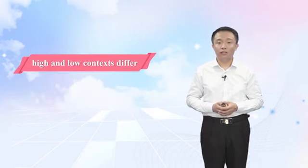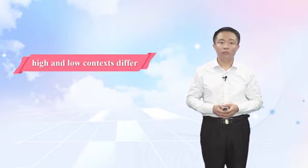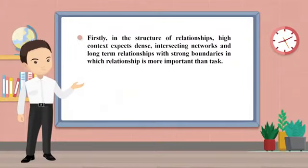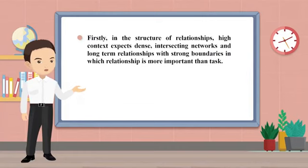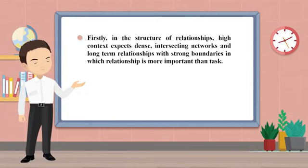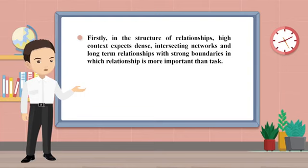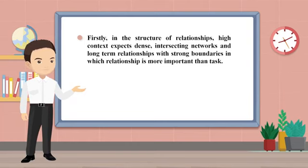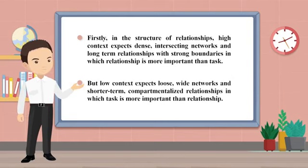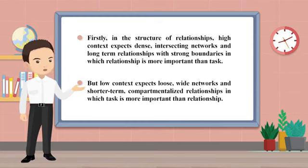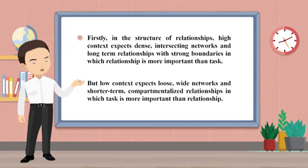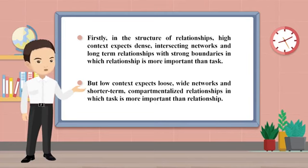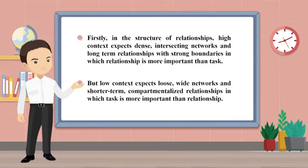Here are the ways that high and low contexts differ. Firstly, in the structure of relationships: high context involves dense, interconnected networks and long-term relations with strong boundaries, in which relationship is more important than task. But low context expects loose, wide networks and short-term, compartmentalized relationships, in which task is more important than relationship.